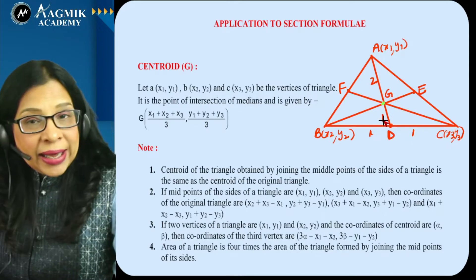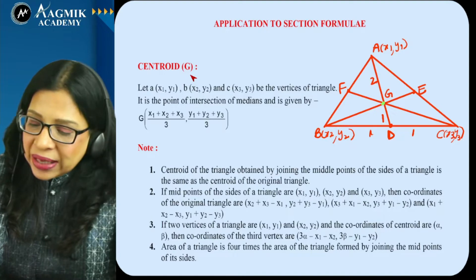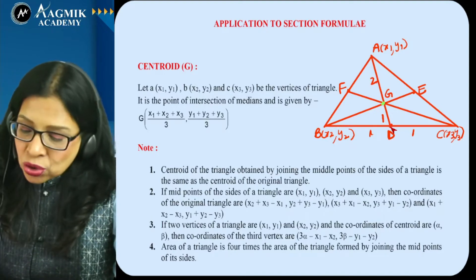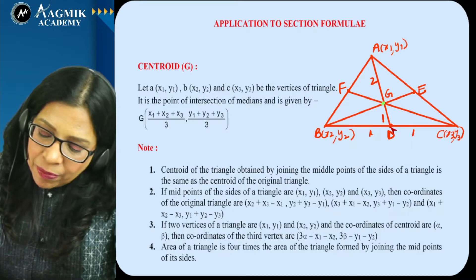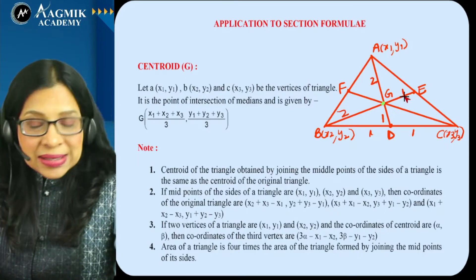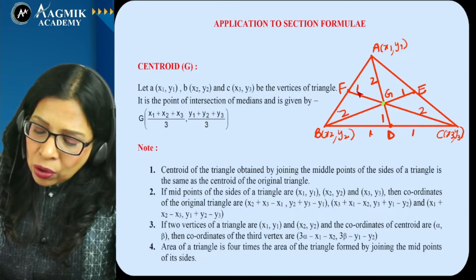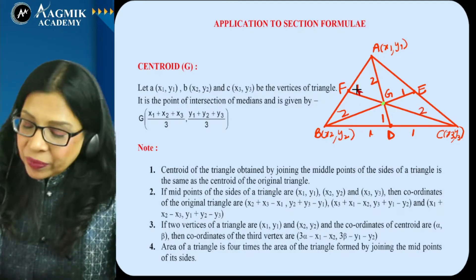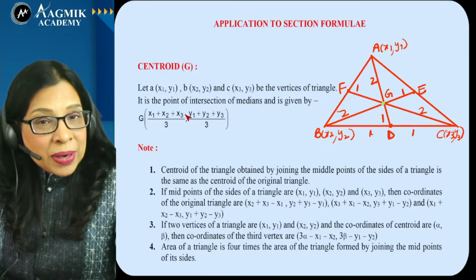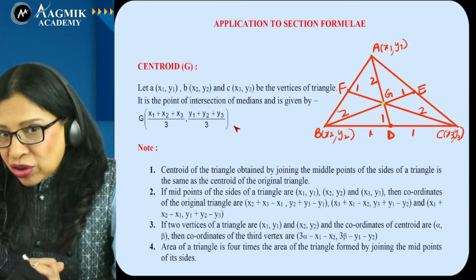G divides each median — AD, BE, or CF — in the ratio 2:1. Applying section formula to any one of them gives coordinates of G as ((x1 + x2 + x3)/3, (y1 + y2 + y3)/3).